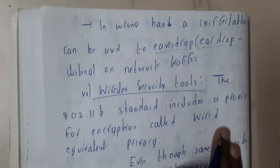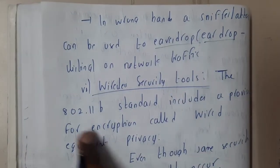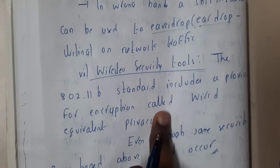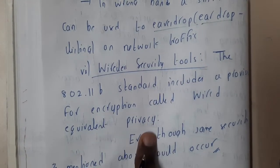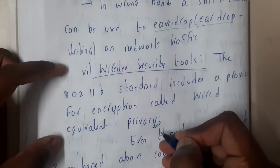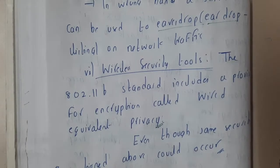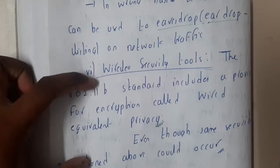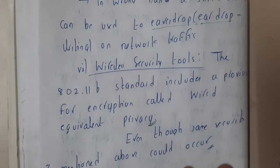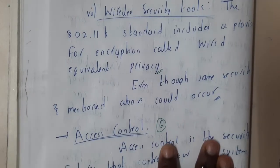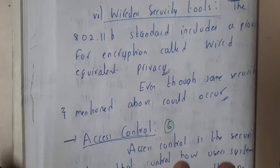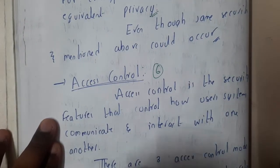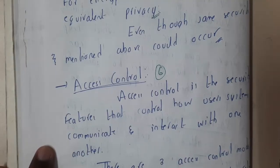The sixth tool covers wireless security. The 802.11b standard includes a provision for encryption called Wired Equivalent Privacy (WEP), which aims to make wireless connections act exactly like wired connections. All the issues we discussed for wired networks can also occur in wireless networks. That covers the basic overview of scanning tools and the scanning process. In the next lecture, we'll be discussing access control. Thank you for watching.